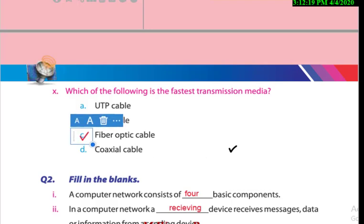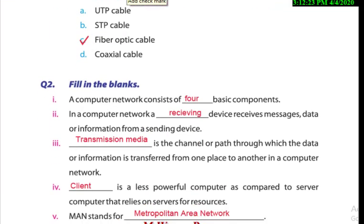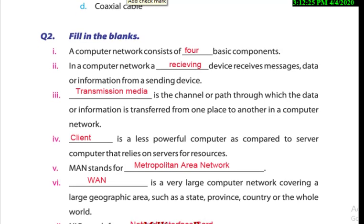Now we discuss fill in the blanks. A computer network consists of basically four basic components, which are: sending device, receiving device, transmission media, and communication media. In a computer network, a dash device receives message, data, or information from a sending device — that is the receiving device. Transmission media is the path or channel through which data or information is transferred from one place to another.